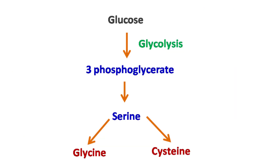Cysteine is synthesized from serine, which is in turn synthesized from 3-phosphoglycerate, which is a product formed during glycolysis. In this video, we will discuss how serine gets converted into cysteine.